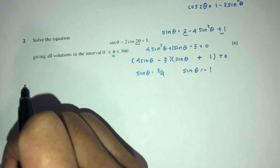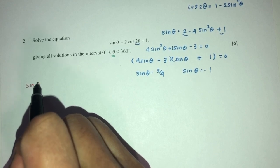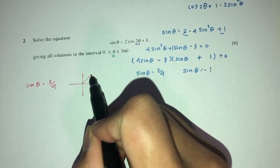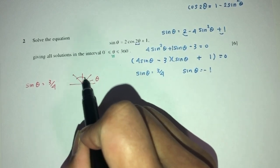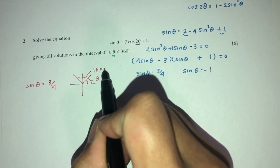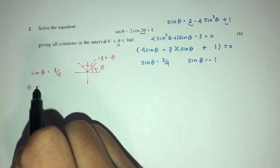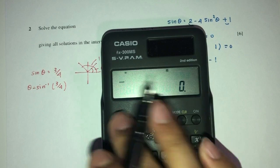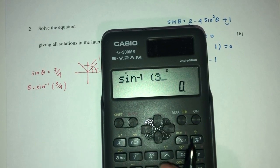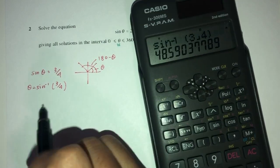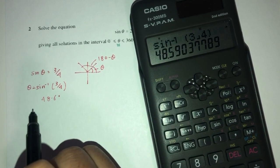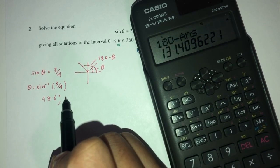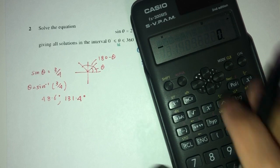For sin θ = 3/4: this is a positive value, so using ASTC it lies in the first and second quadrants. θ = sin⁻¹(3/4) = 48.6°, and the second solution is 180° − 48.6° = 131.4°.